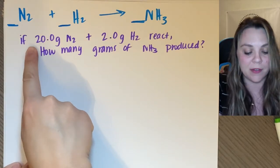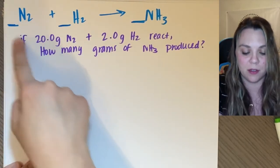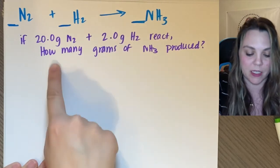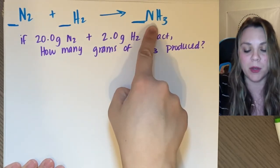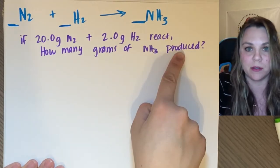So the problem is if you have 20 grams of nitrogen reacting with 20 grams of hydrogen, how many grams of ammonia will actually be produced?